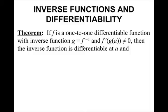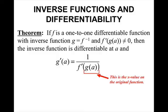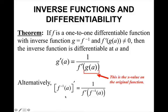Inverse functions and differentiability: if f is a one-to-one differentiable function with inverse g = f⁻¹, and f′(g(a)) ≠ 0, then the inverse function is differentiable at a and g′(a) = 1 / f′(g(a)), where g(a) is the x value on the original curve. Alternatively: (f⁻¹)′(a) = 1 / f′(f⁻¹(a)).